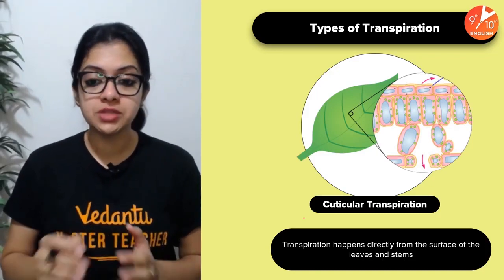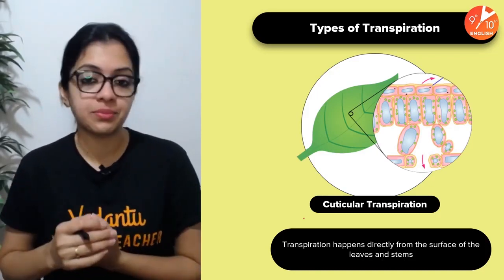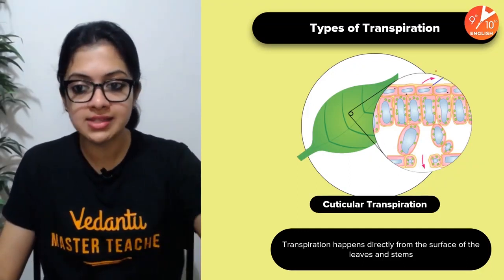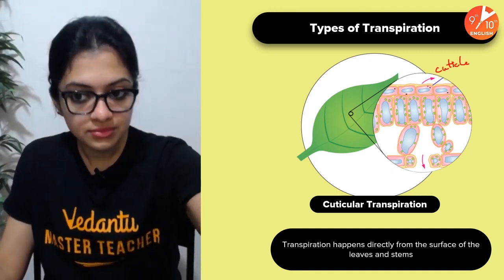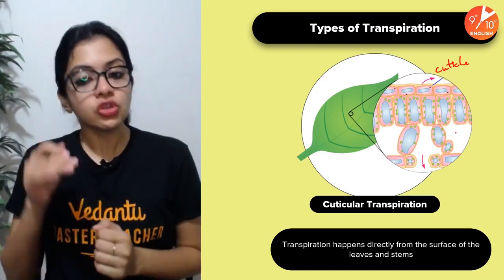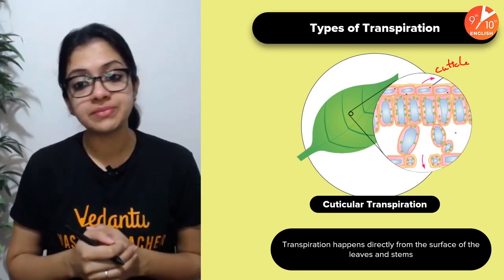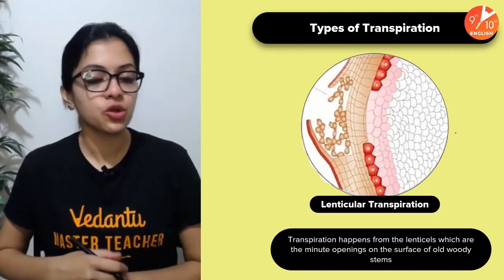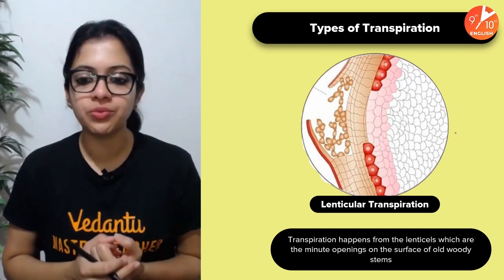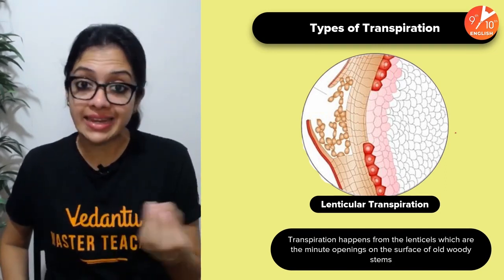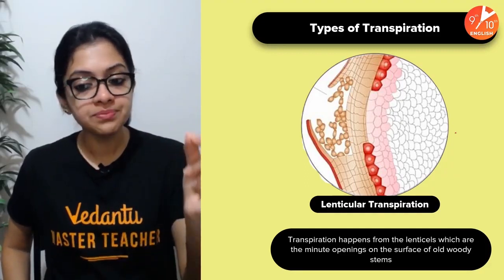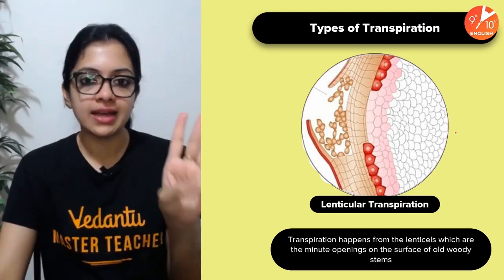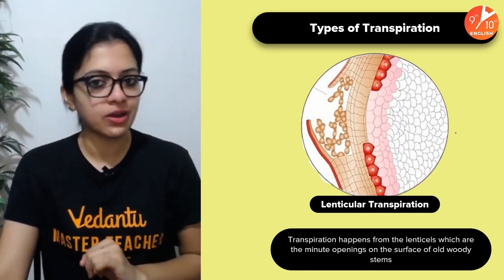Cuticular transpiration occurs directly from the surface of leaves and stems through a waxy coating called the cuticle, found just outside the epidermis. Apart from stomatal and cuticular, there is also lenticular transpiration, where transpiration happens from the lenticels — tiny openings found along the bark of woody stems. So the three major kinds are stomatal, cuticular, and lenticular transpiration.